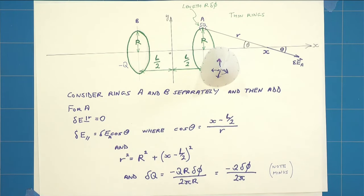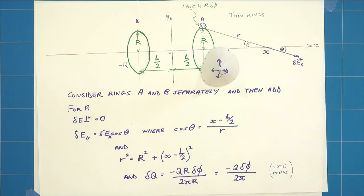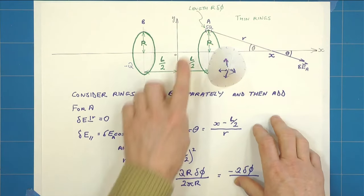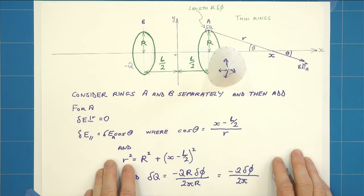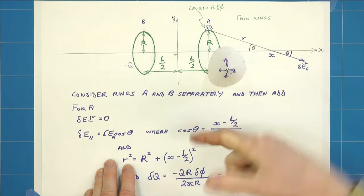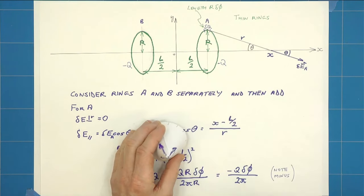If we looked end on along the x-axis, hopefully you can see that the field is coming out in every direction. What that means is that the tangential field, the field in the y-direction, will be zero because in one direction it's cancelled by something in the other, and that happens all the way around.